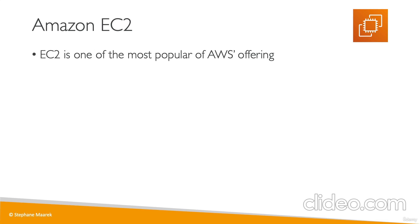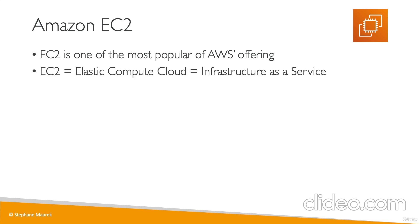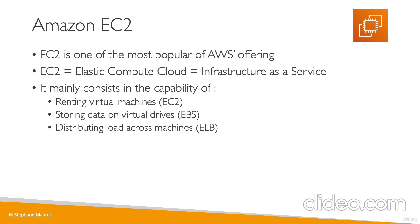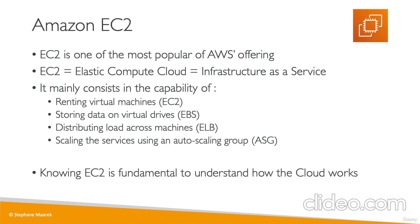So what is Amazon EC2? EC2 is one of the most popular AWS offerings — it is definitely used everywhere. It stands for Elastic Compute Cloud, and this is the way to do infrastructure as a service on AWS. EC2 is not just one service; it's composed of many things. You can rent virtual machines called EC2 instances, store data on virtual drives or EBS volumes, distribute load across machines with an Elastic Load Balancer, and scale services using an Auto Scaling Group. Knowing how to use EC2 is fundamental to understanding how the cloud works.